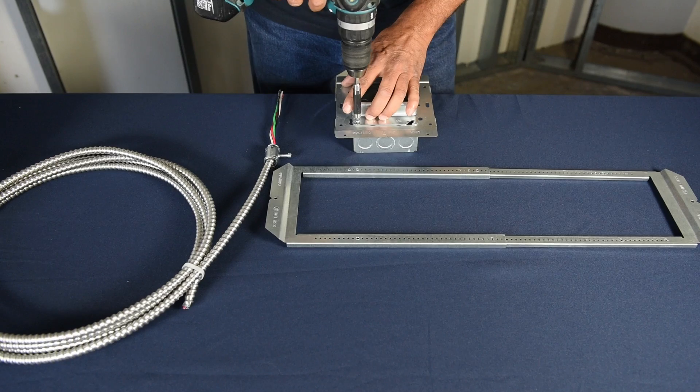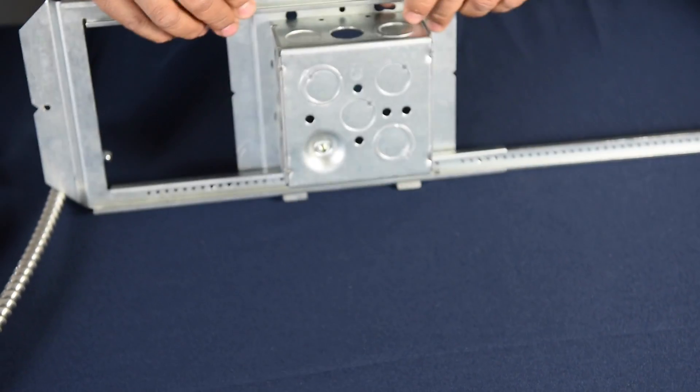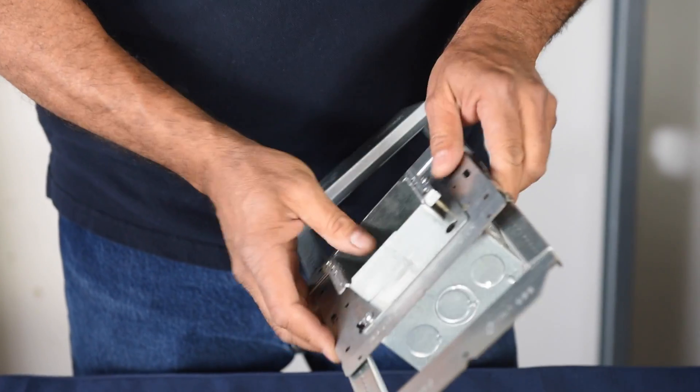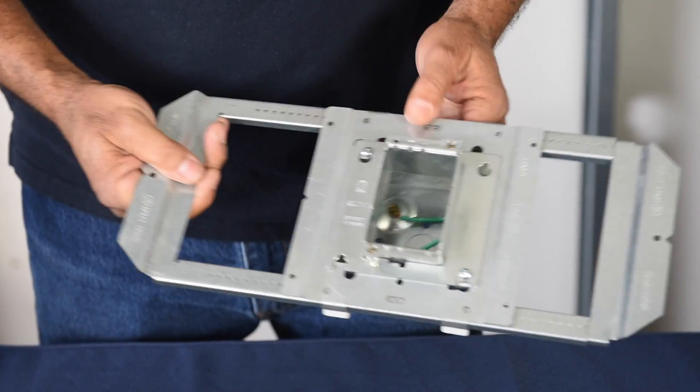When installing a UMA onto an SSB, you can use pre-wired or non-pre-wired box and ring assemblies. When installing a non-pre-wired box, simply take the assembly and snap onto the SSB.